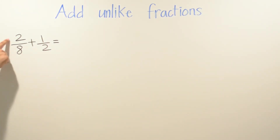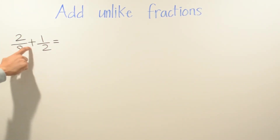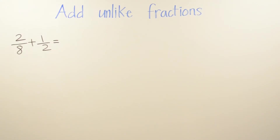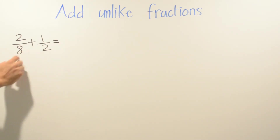In this problem we have two-eighths plus one-half. If you want to try to solve this problem, go ahead and pause the video now and try it on your own, then come back and hit play to check your answer. The fractions do not have a common denominator, so we're going to find the least common multiple for 8 and 2.